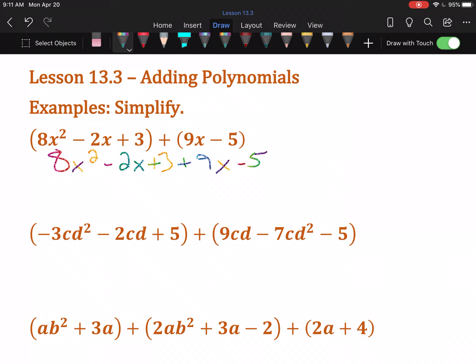There's a single thing that has x squared, so it gets to just come along for free. There are two terms that have x, the -2x and positive 9x. So -2 + 9 is positive 7x. And then the two number parts, positive 3 and negative 5, which combine to make -2.